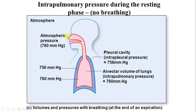The pressure outside is 760 mmHg, but within the cavity between the parietal pleura and visceral pleura, the pressure is 756 mmHg — a difference of 4 mmHg. This is the normal difference. Intrapulmonary pressure, meaning the pressure within the trachea, bronchi, bronchioles, and alveoli, is equal to atmospheric pressure at 760 mmHg. The pleural cavity pressure between the parietal and visceral pleura is 756 mmHg, a 4 mmHg difference.